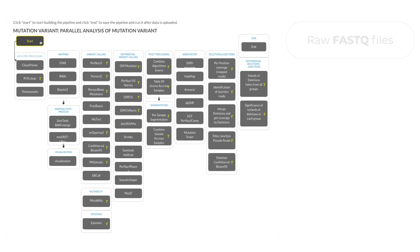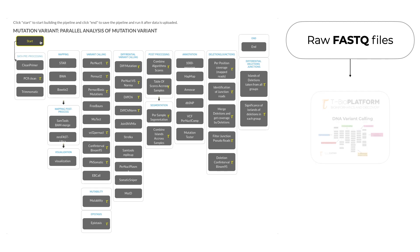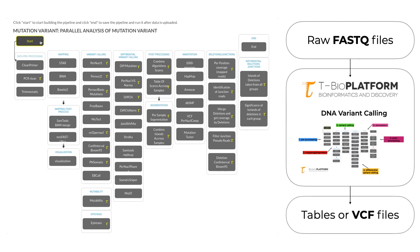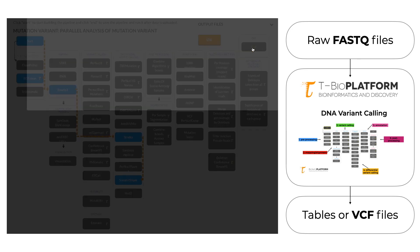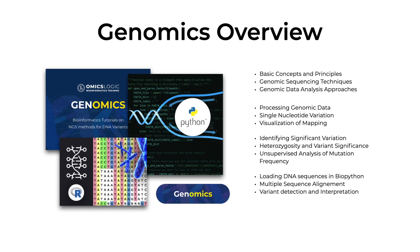To achieve such results, we have to take raw data or FASTQ files with short reads, run a pipeline for variant calling, and get an output of tables or VCF files. The pipeline might include several pre-processing, mapping, and somatic variant calling steps to ultimately produce the table that we can then analyze for statistical significance of found variants. To learn more about such analysis of genomic data, you can review additional detailed tutorials in the genomics course, where you will see the basic concepts and principles of genomics, explore genomic data analysis, processing, single nucleotide variation, as well as variant detection and interpretation.